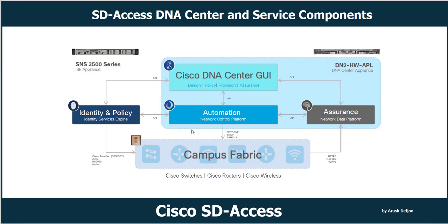This is the communication between the DNA Center appliance — shown in blue — and here we have ISE, and also the Campus Fabric. Inside of DNA Center we have multiple components I want to explain. There are also different methods of communication between the DNA Center appliance and ISE, and also Campus Fabric — we need to know about them.